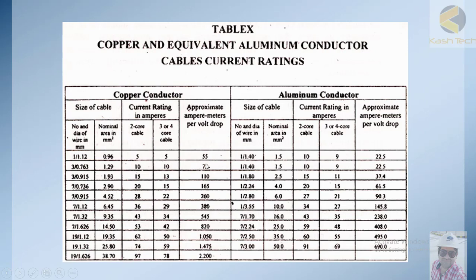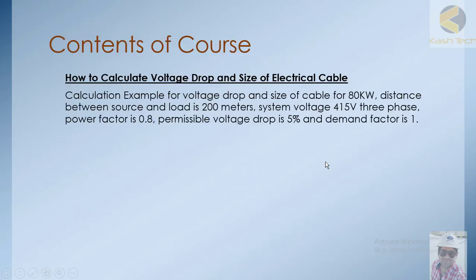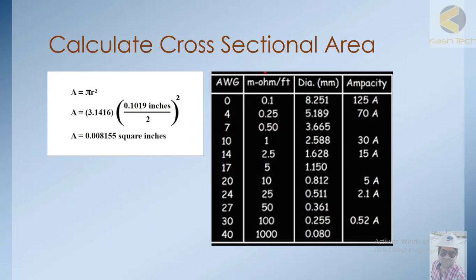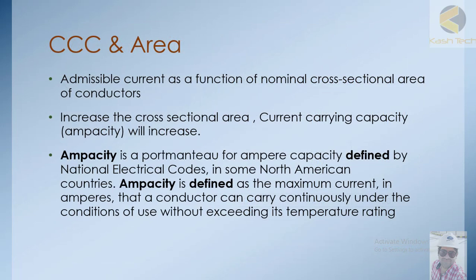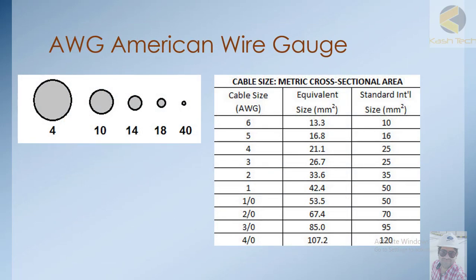The table also shows approximate voltage drop in millivolts per ampere per meter, and short circuit ratings. This information is provided by the cable manufacturer. This has been a brief introduction to cross-section area and how it is measured and applied in the real world.